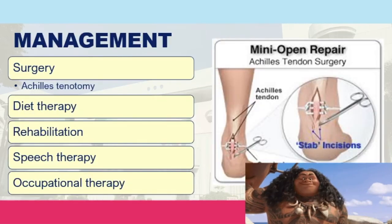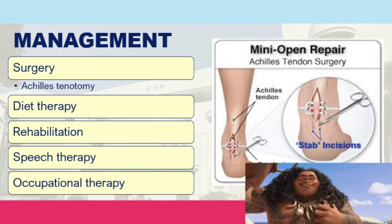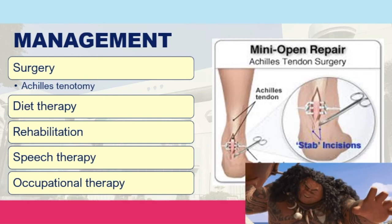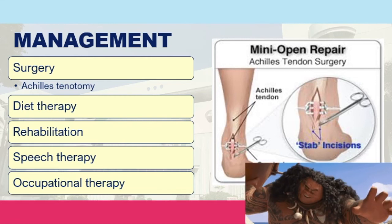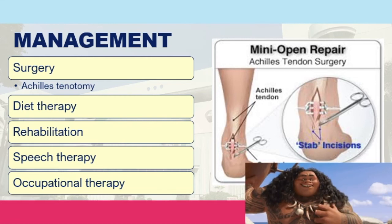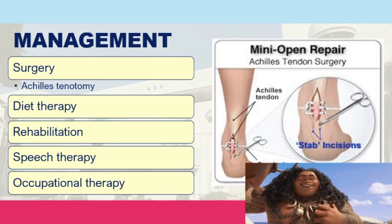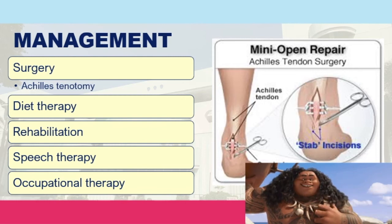Patients experiencing severe Achilles tendon deformity may undergo Achilles tenotomy, which involves transection of the Achilles tendon in a mini-open repair to release pain. Diet therapy, rehabilitation, speech therapy, and occupational therapy are also provided based on the specific needs of the patient.